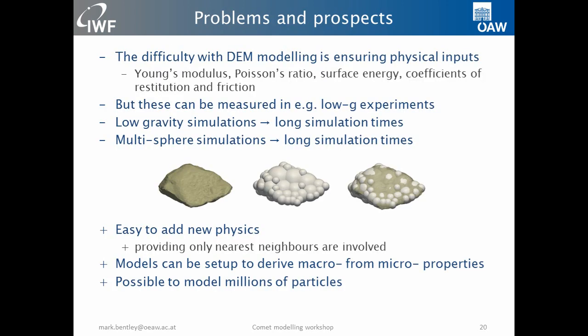The problem is that ensuring this is realistic is quite difficult. Some particle properties are known from aggregation experiments — coefficients of restitution and surface energies can be measured — but to really understand the behavior you need to compare simulations with experiments and show that the bulk behavior is as expected. Low gravity and multi-sphere simulations unfortunately lead to long simulation times and you have to find tricks to deal with this. On the plus side, it's very easy to add new physics, because the computational difficulty is in finding nearest neighbors when you have millions of particles — and that is taken care of efficiently by the code. These days with computers, clusters, and GPUs, you can run with some billions of particles.